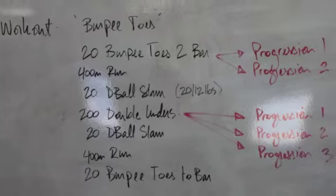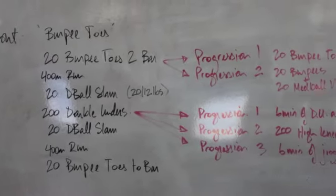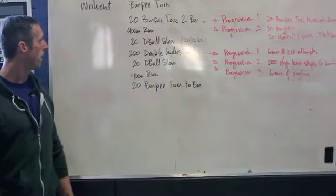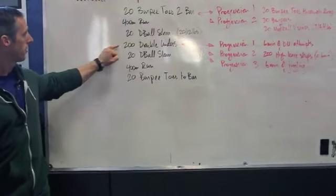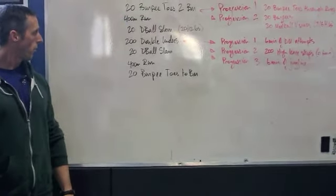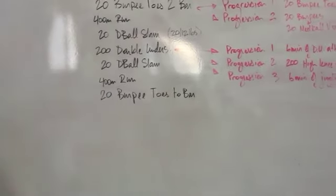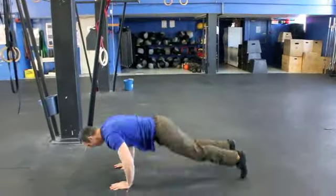This workout is called burpee toes and it's going to start off with 20 burpee toes to bar, then a 400 meter run, 20 d-ball slams, 200 double unders, 20 d-ball slams, 400 meter run, and 20 burpee toes to bar.